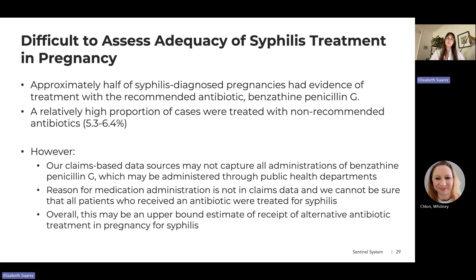We had difficulty assessing adequacy of syphilis treatment in pregnancy. Only about half of pregnancies with a syphilis diagnosis had evidence of the recommended antibiotic benzathine penicillin G, and a relatively high proportion were treated with non-recommended antibiotics. Claims-based sources may not capture all administrations of the recommended treatment, as it is expensive and may be administered through public health departments which are not reimbursed through insurance. We also lack indication data for medications, so we cannot confirm that all patients receiving alternative antibiotics did so for syphilis — our estimate of alternative antibiotic use may be an upper bound.